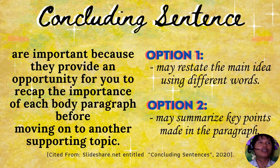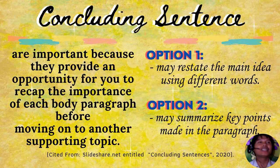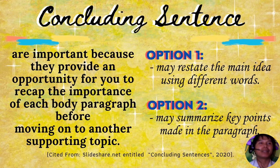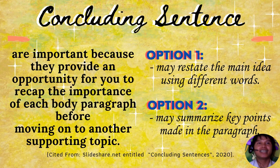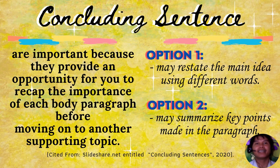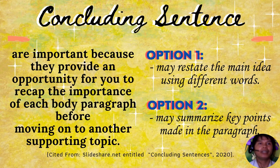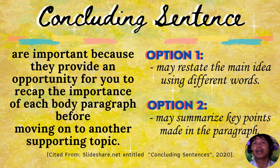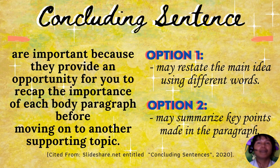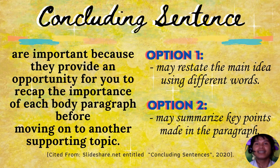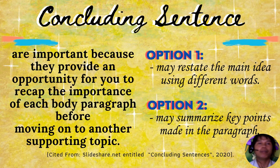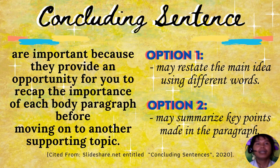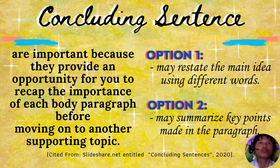The final section of the basic paragraph contains a concluding sentence. Its purpose is to provide closure on that particular topic or idea before concluding the paragraph. The concluding sentence is not a simple restatement of the topic sentence, but rather a brief summary of how the supporting details shared in the paragraph support the controlling idea. Concluding sentences are important because they provide an opportunity to recap the importance of each body paragraph before moving on to another supporting topic.